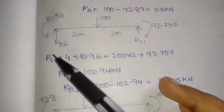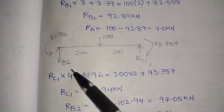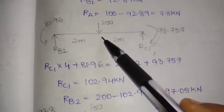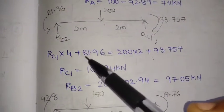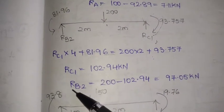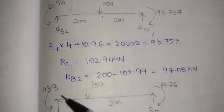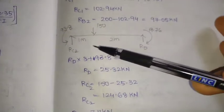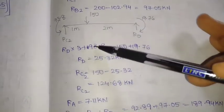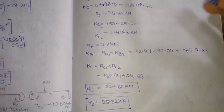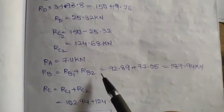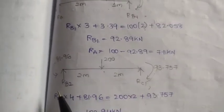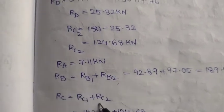For span BC, RB2 and RC1 are identified. Taking moments: RC1 × 4 with the 81.96 kNm moment on one side and the 200 kN load on the other. Using summation of vertical forces (ΣFy = 0), RB2 is obtained. Similarly, reactions in span CD are calculated to get RC2 and RD. Total reactions are: RB = RB1 + RB2, and RC = RC1 + RC2.